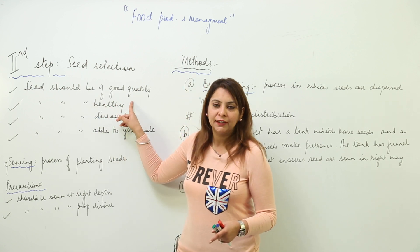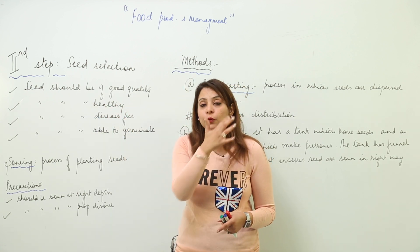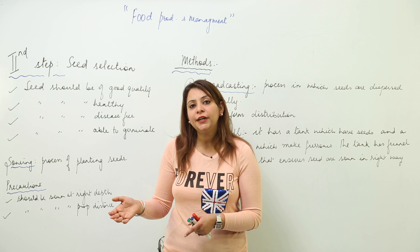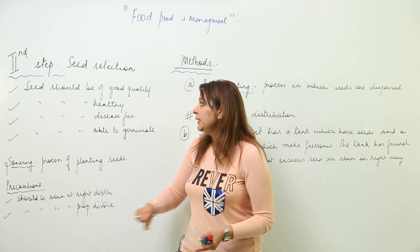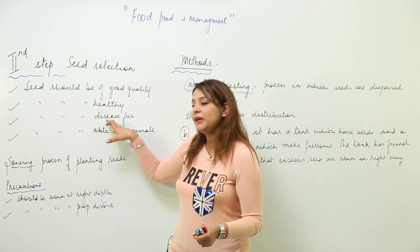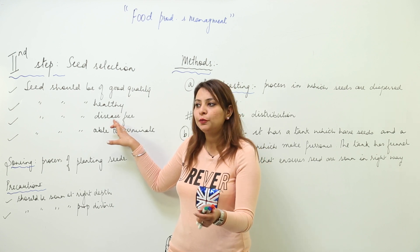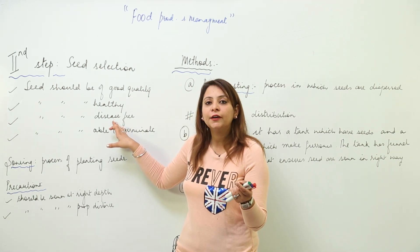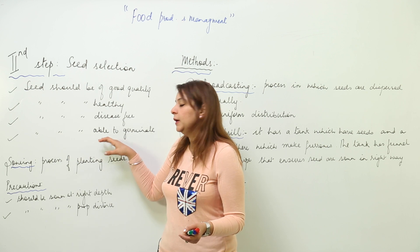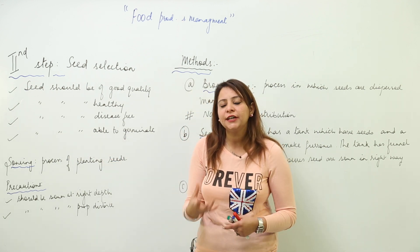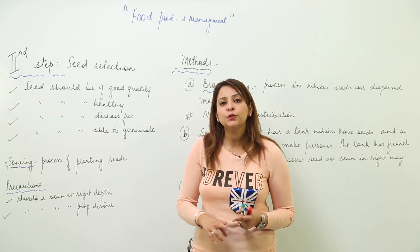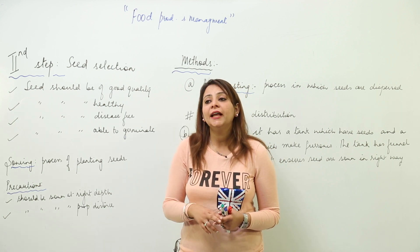The criteria for selecting seeds: we want seeds of good quality, because only then will you get a high yield and a good quality crop. If a farmer gets a good quality crop, only then will he get a monetary gain. Second, the seed should be healthy — it should be able to grow well. Third, it should be disease-free, because we want our crop to be healthy. Fourth, the seed should be able to germinate well. These are the characteristics we are looking for in a seed.